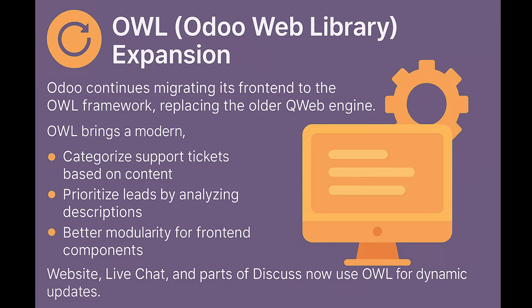Framework and Technical Improvements in Odoo 19. Odoo 19 brings several under-the-hood changes that improve performance, stability, and developer experience. Odoo continues migrating its front-end to the OWL framework, replacing the older QWeb engine. OWL brings a modern reactive JavaScript UI approach, resulting in faster rendering, smoother inline editing, and better modularity for front-end components. Website, live chat, and parts of Discuss now use OWL for dynamic updates.